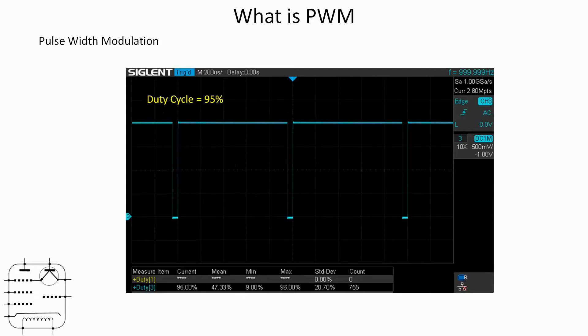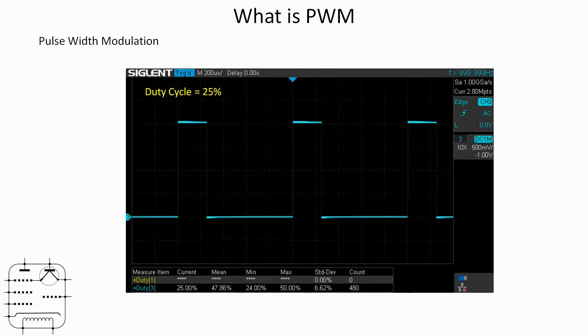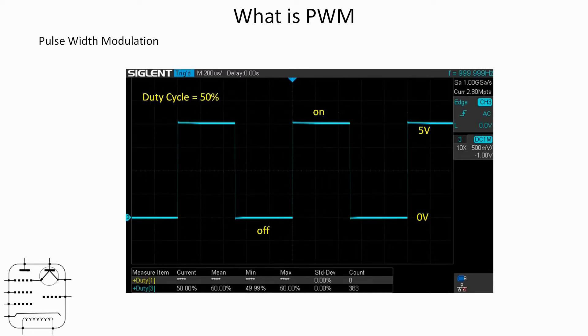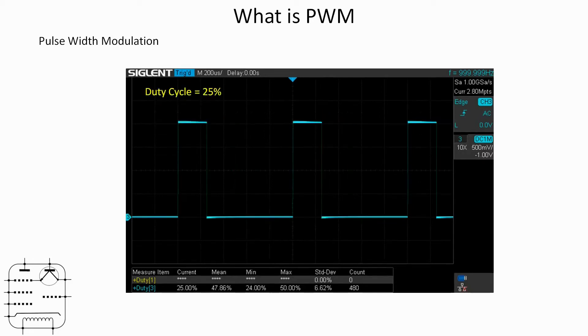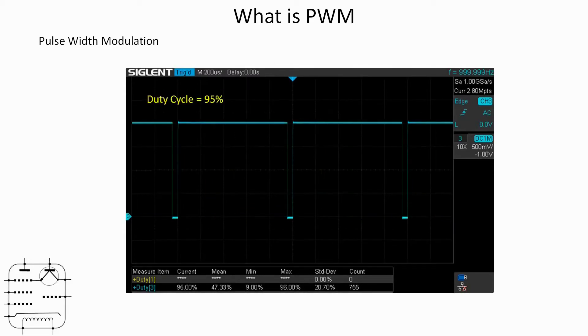But why is that important? Well if you think about the amount of energy that is available in a 50% duty cycle signal, the total amount of energy would involve 100% duty cycle so half the power is there. It's on for half the time and off for half the time. When you get something like a 95% duty cycle it's on for very nearly all the time but not quite. So what use is that?